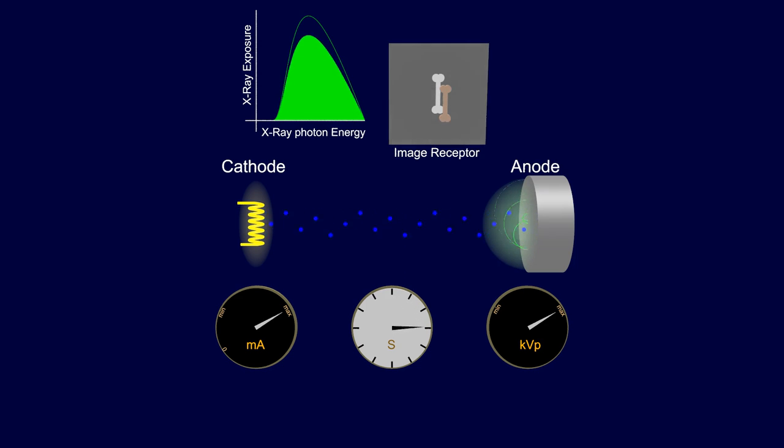Maximum MA produces the largest amount of electrons and takes the least amount of time to reach the set exposure.